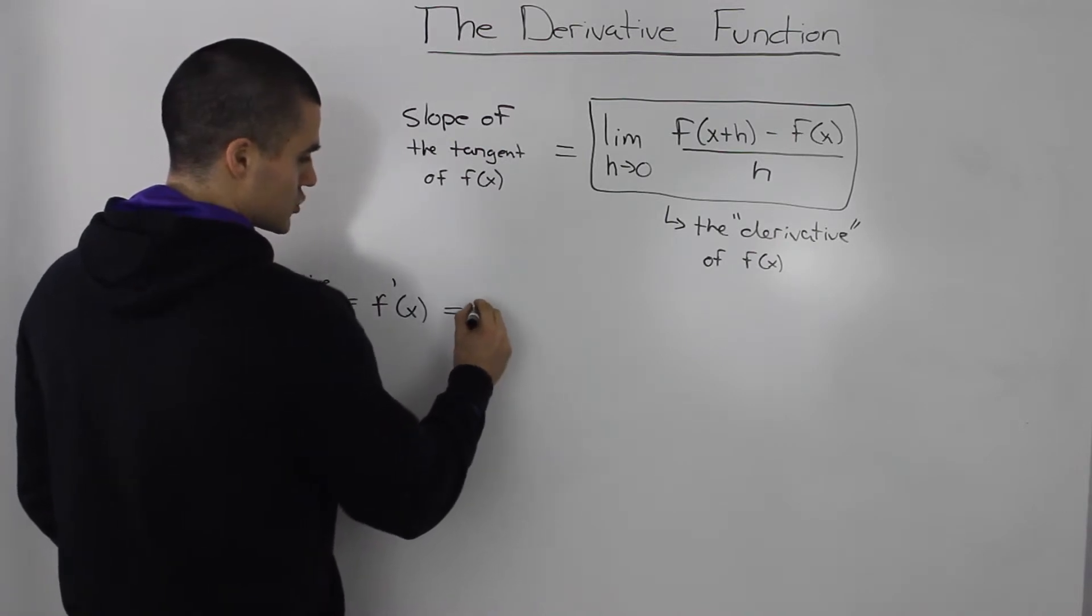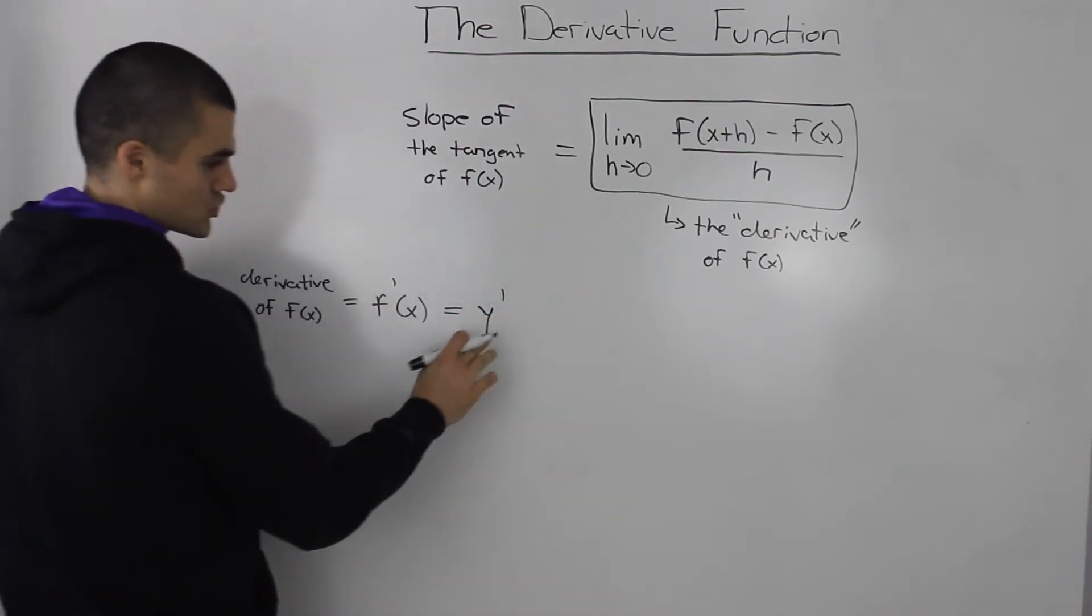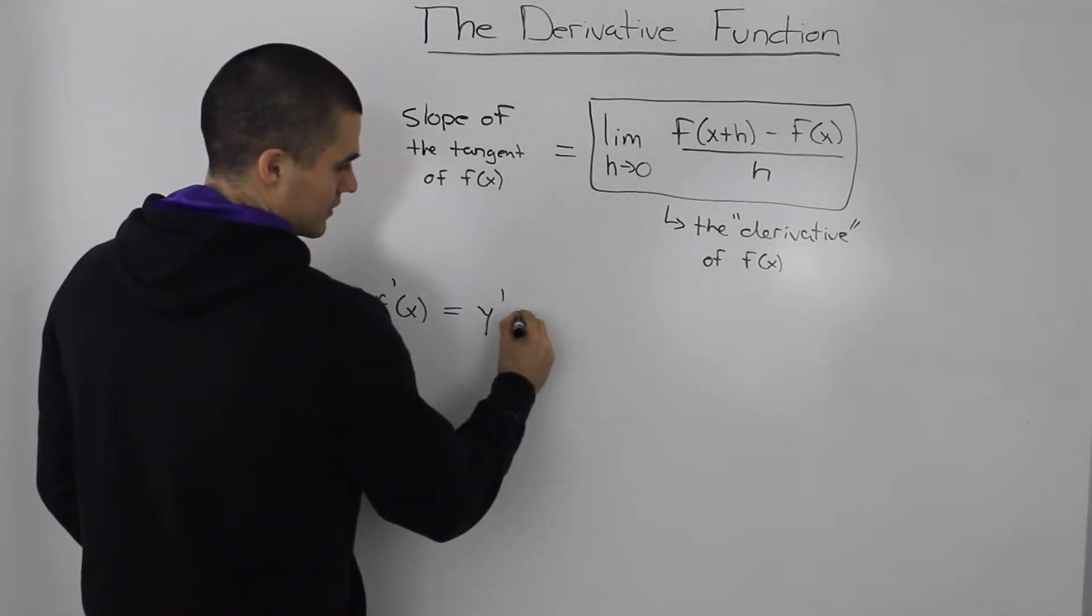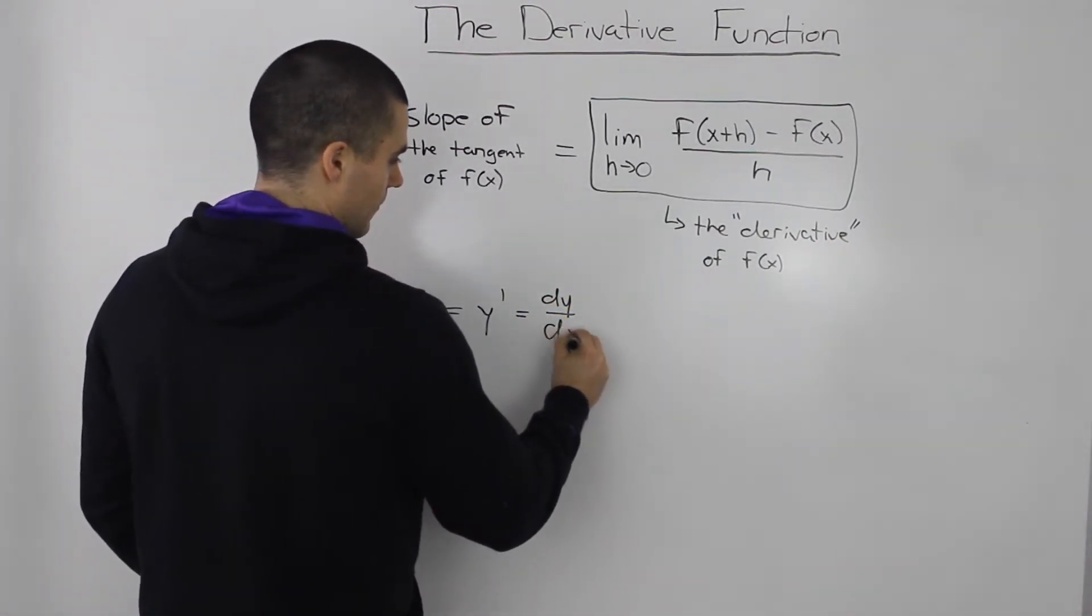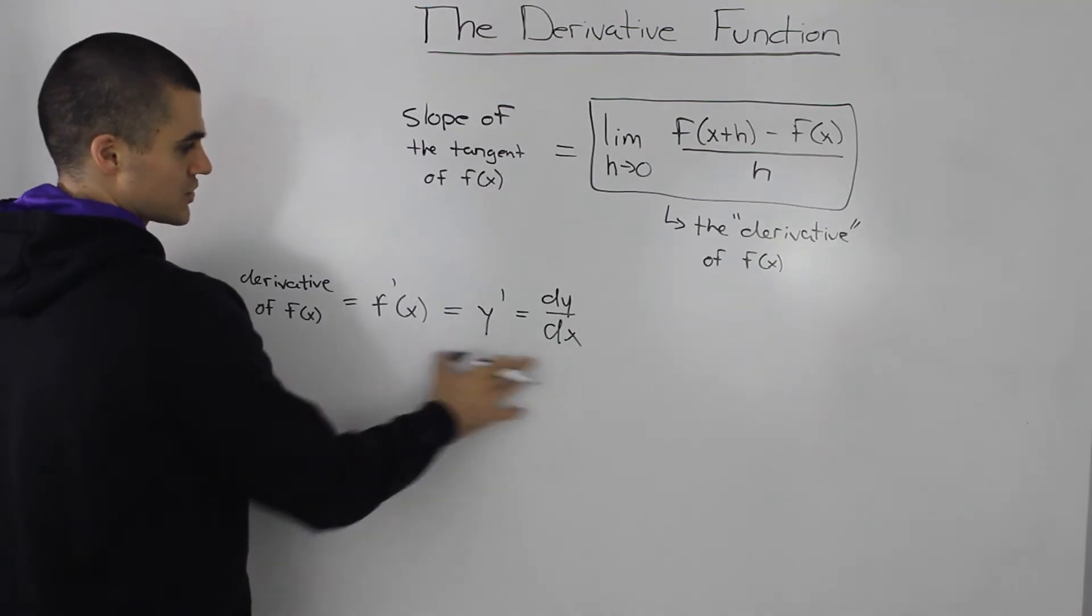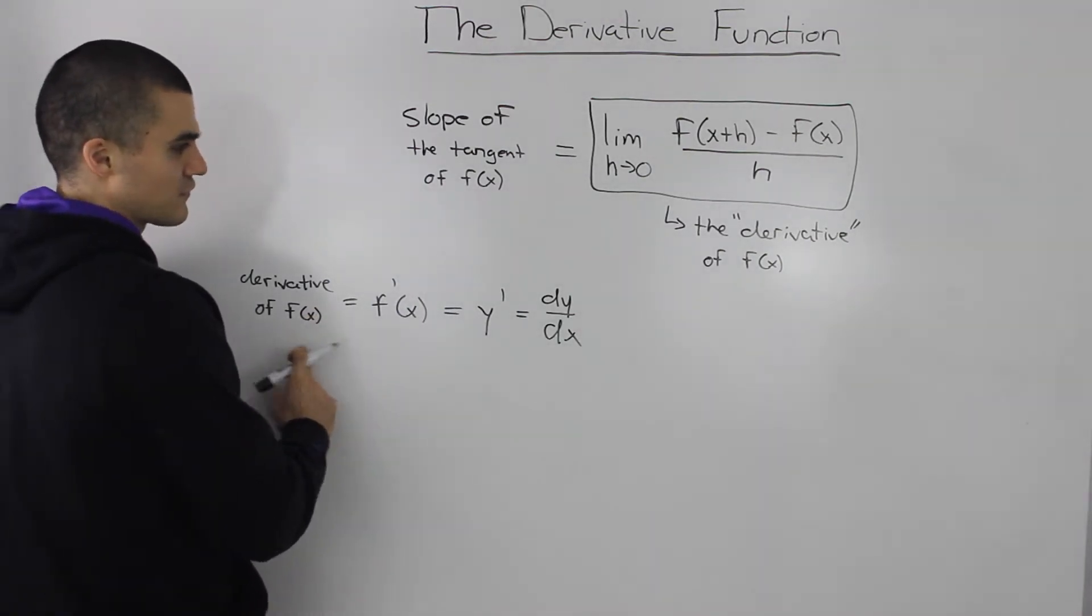The derivative can also be shown as like a y apostrophe. You might also see something like this. So all of these notations here, they just mean the derivative of f of x.